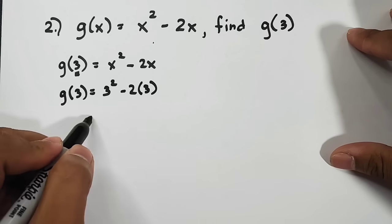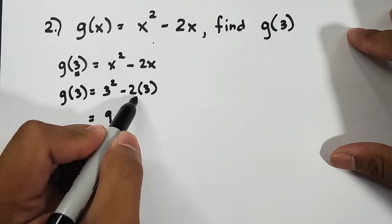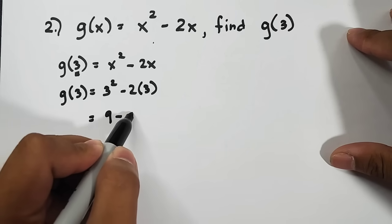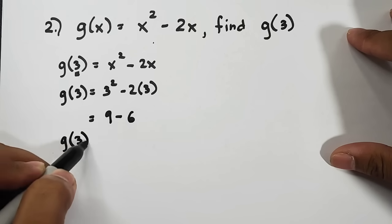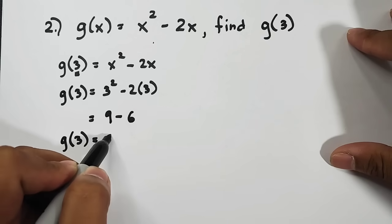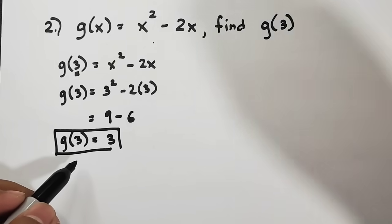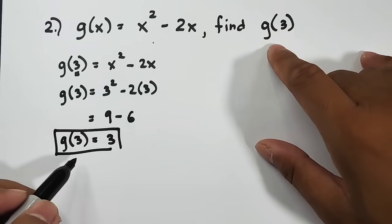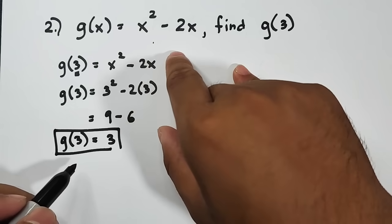Simplify this part. You have now, 3 squared is 9. Then, negative 2 times 3 is negative 6 or minus 6. And, the value of g of 3 is simply 9 minus 6, which is equal to 3. This is the answer for item number 2. If you want to evaluate g of 3, given the function g of x is equal to x squared minus 2x.